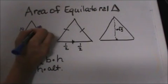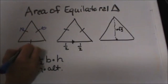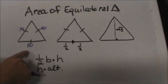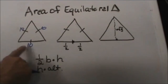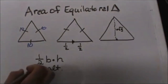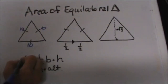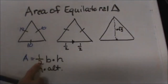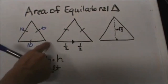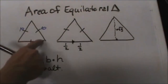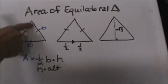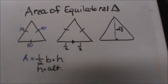So if we know this side is 10, this side is 10, and this side is 10 — that's what an equilateral triangle is. Now to find the area we need to know that the area of a triangle is equal to one half the base times the height. We have the base and that's 10, but we don't have the altitude or the height.